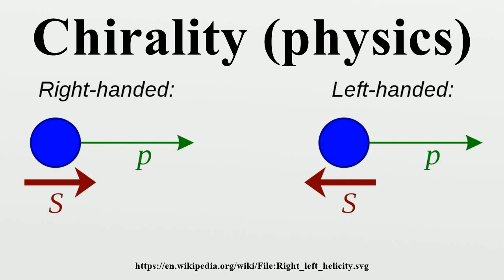A chiral phenomenon is one that is not identical to its mirror image. The spin of a particle may be used to define a handedness, or helicity, for that particle which, in the case of a massless particle, is the same as chirality.